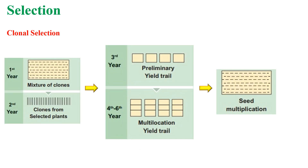The next method of selection is clonal selection. A group of plants produced from a single plant through vegetative reproduction are called clones. All plants of a clone are similar in genotype and phenotype. Selection of a desirable clone from a mixture of clones is called clonal selection. The procedures in clonal selection are pretty much similar to the procedures of pure line selection.